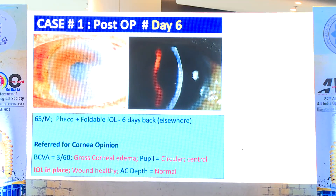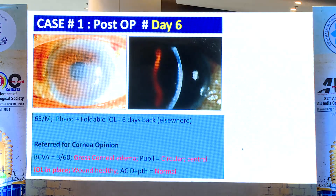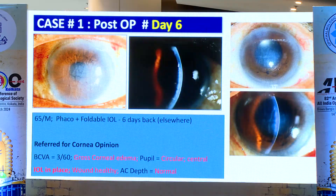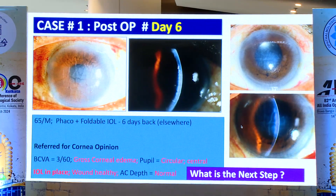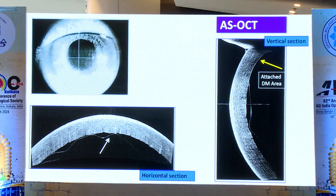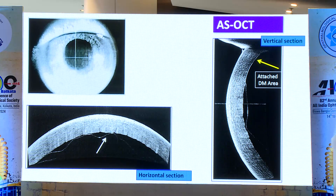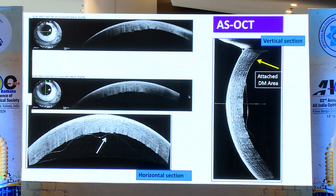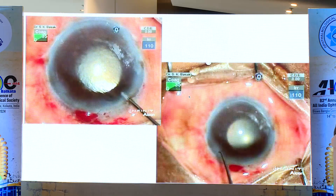You can see the corneal graft is in place. I didn't notice any extra energy use in this case — the cataract was just grade NS3. On slit lamp I could make out there was a Descemet's detachment. I performed anterior segment OCT with both vertical and horizontal sections to see the full extent of the Descemet's detachment, because you need to define the detachment area before injecting air to clear the cornea.